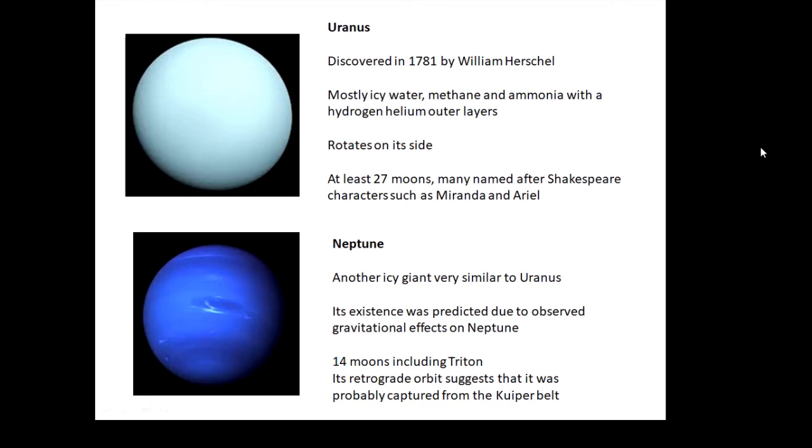Lots of hydrogen and helium again. Interestingly it rotates on its side. It has quite a few moons, 27 moons, named after Shakespeare characters such as Miranda and Ariel.